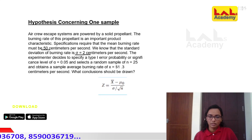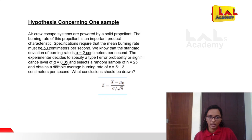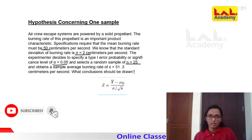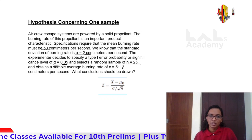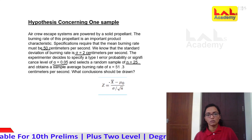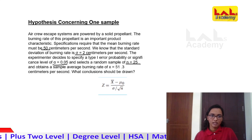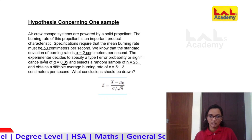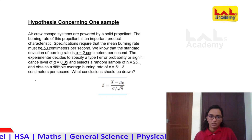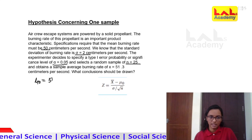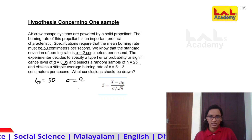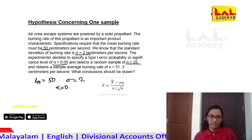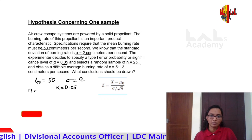The experimenter decides to specify a type 1 error probability or significance level of alpha equal to 0.05 and selects a random sample of n equal to 25, obtaining a sample average burning rate of x-bar equal to 51.3 centimeters per second. The mean burning rate specification is mu equal to 50 centimeters per second, sigma equal to 2 centimeters per second, and alpha is 0.05 with 25 samples.